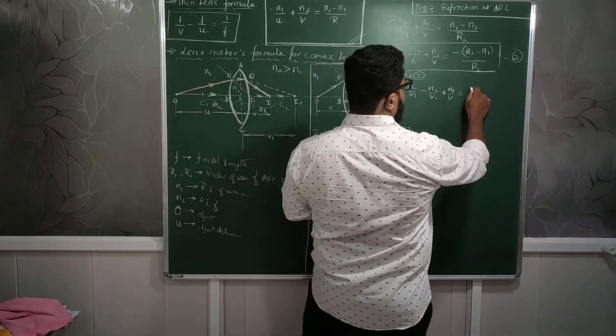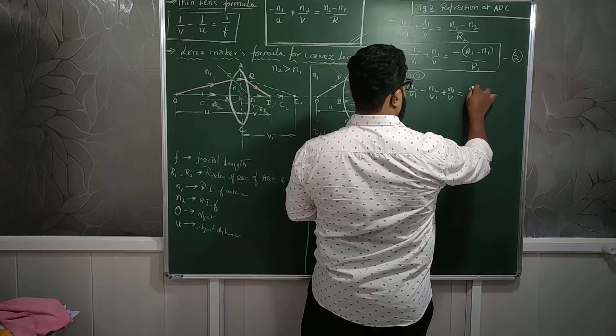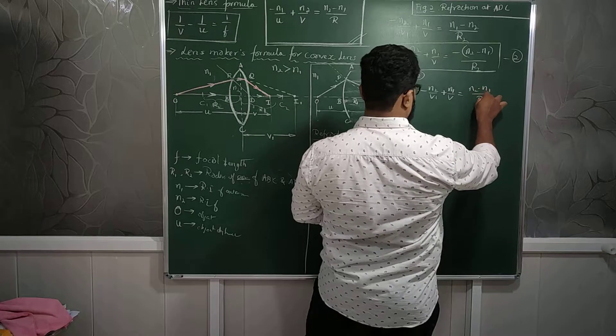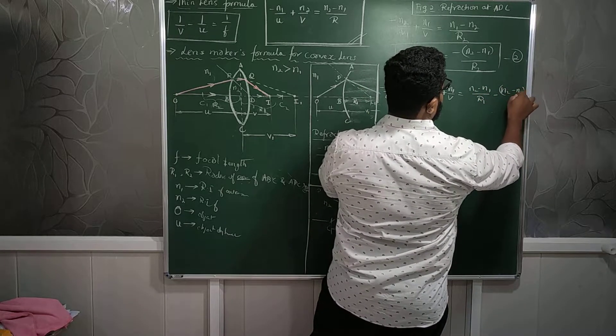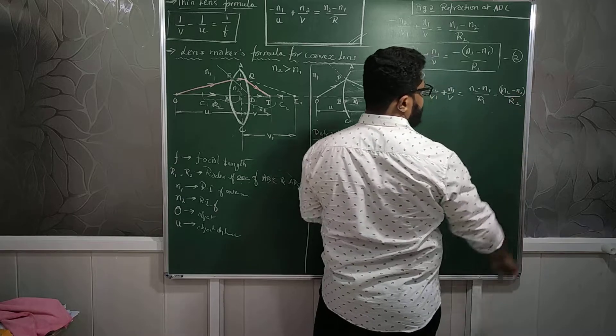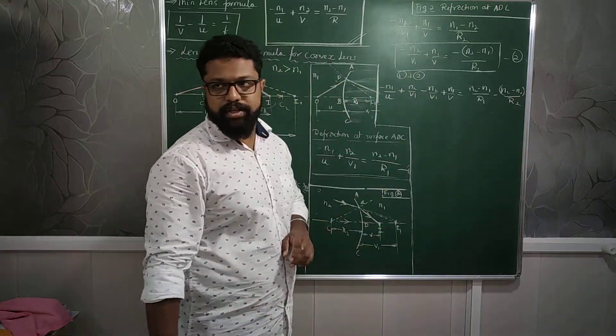The right hand side: N2 minus N1 divided by R1 minus N2 minus N1 divided by R2. That is how the addition will look like.